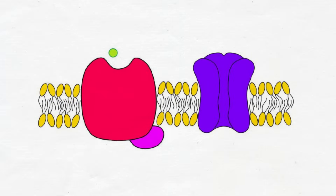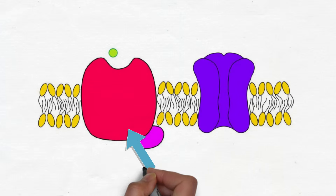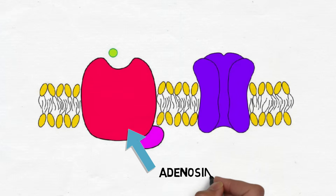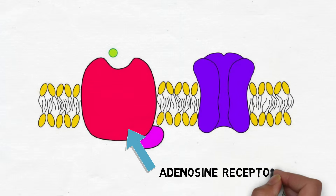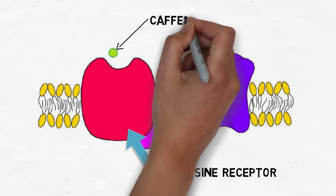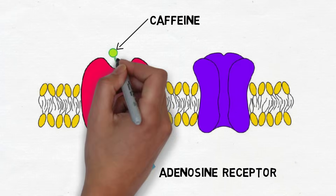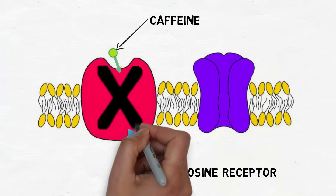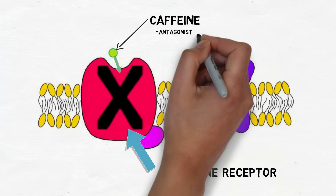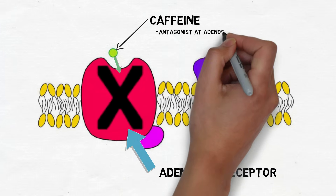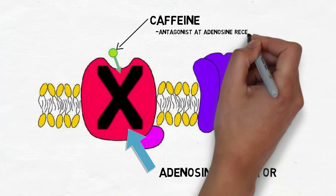Most of the effects of caffeine are thought to be traceable back to its action as an antagonist at receptors for a neurotransmitter called adenosine. This means that caffeine binds to adenosine receptors and blocks adenosine from binding there and activating the receptor, thus reducing activity at the adenosine receptor.